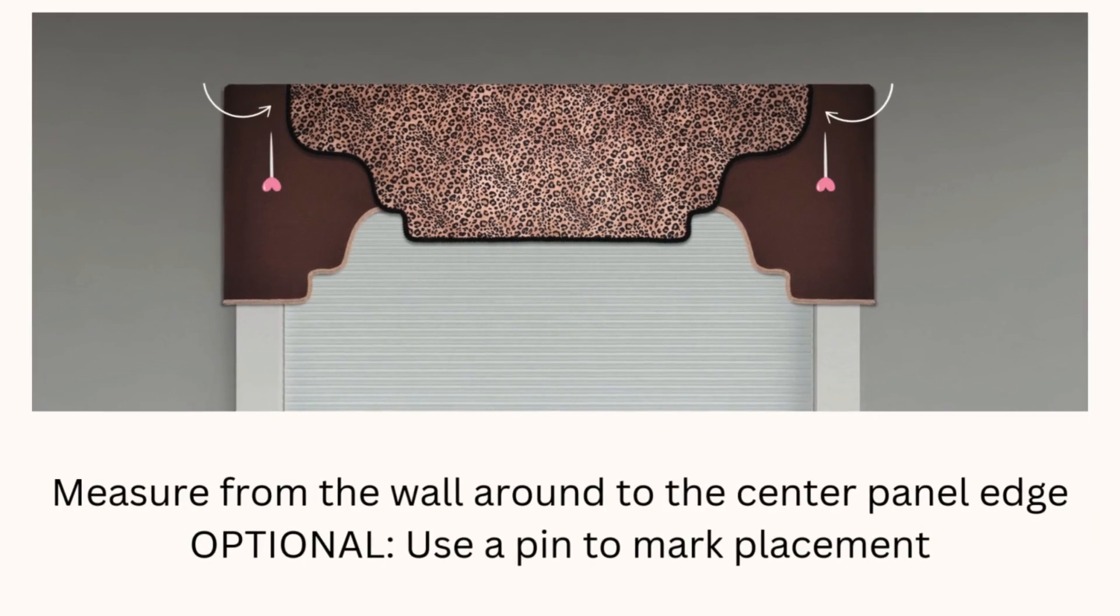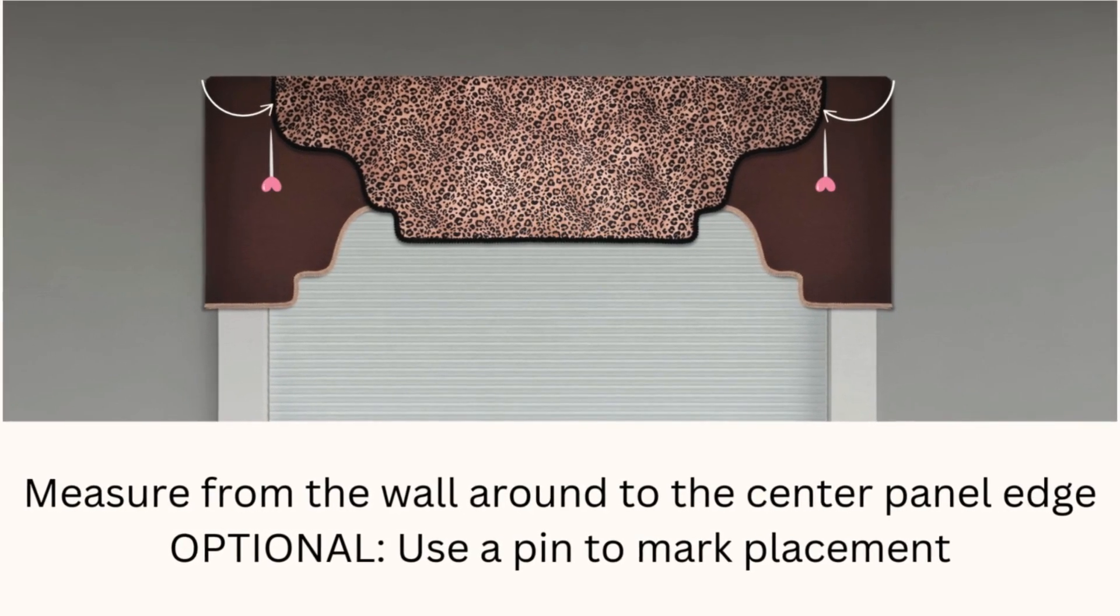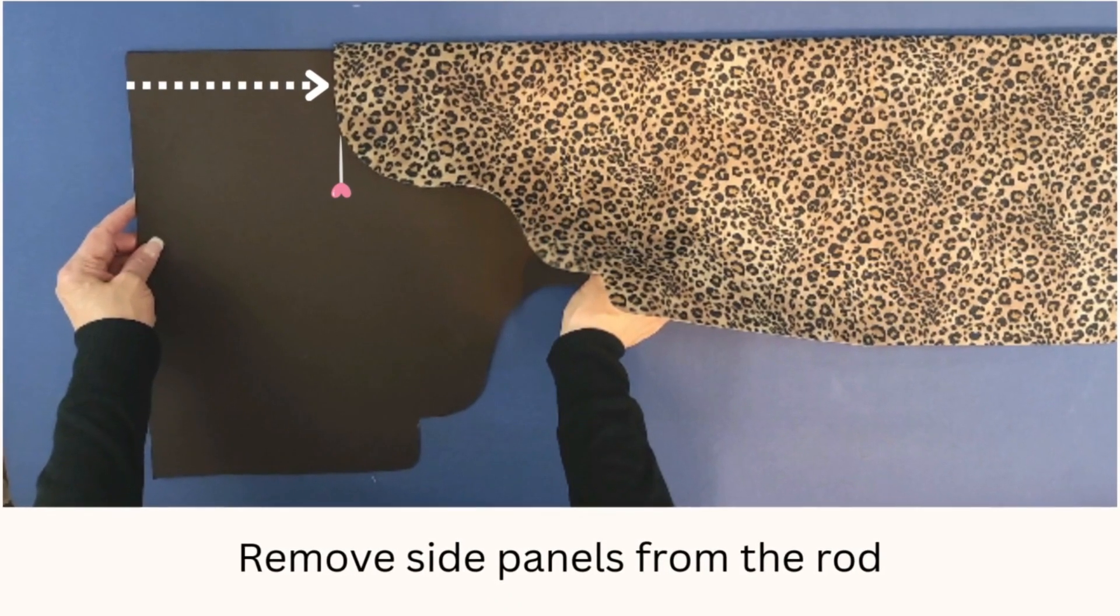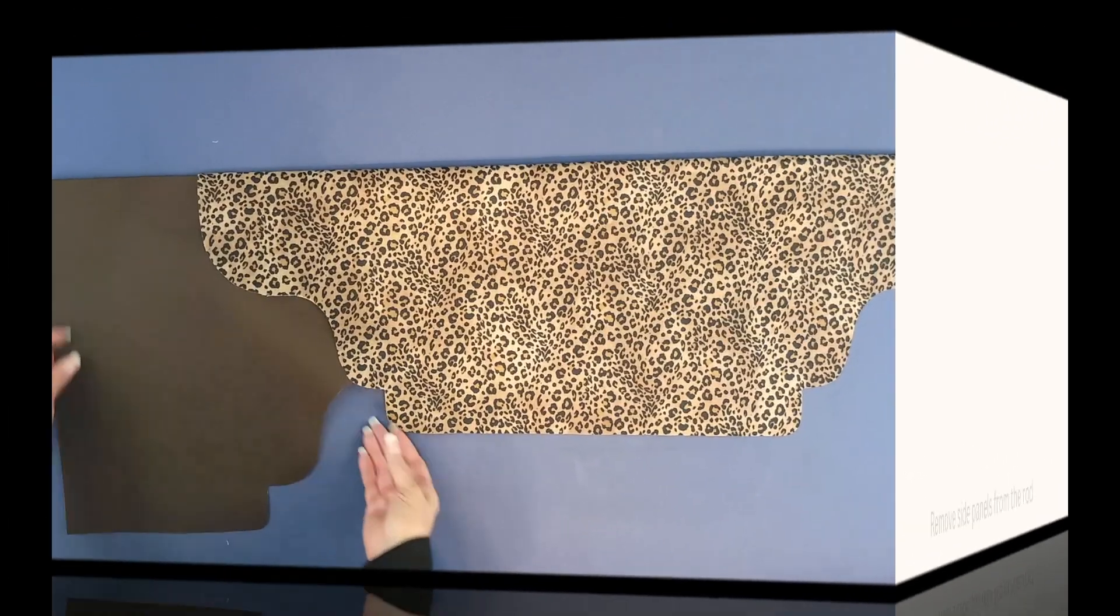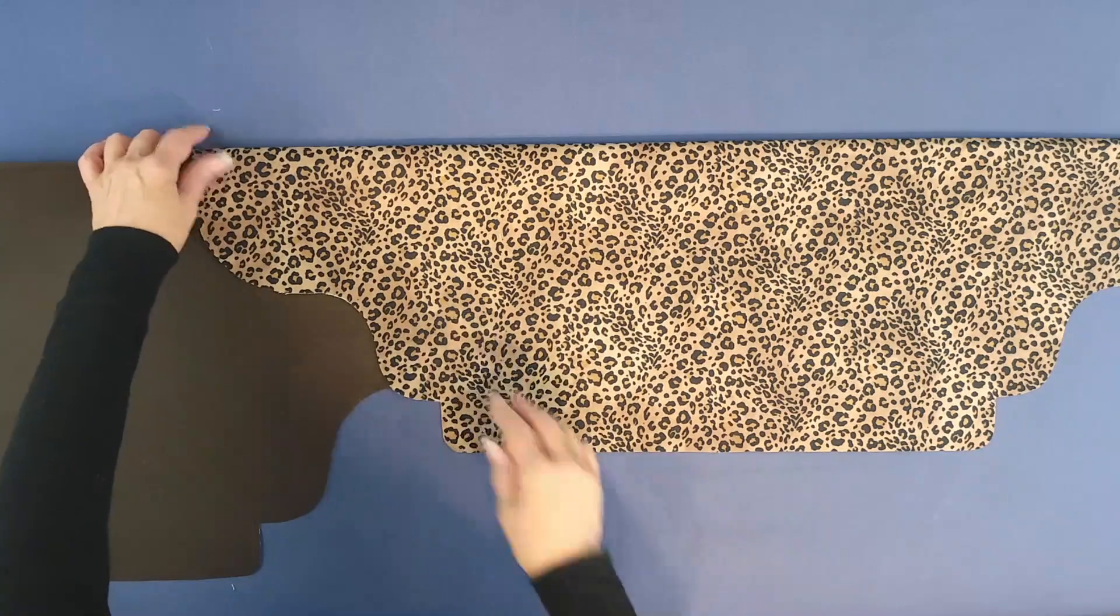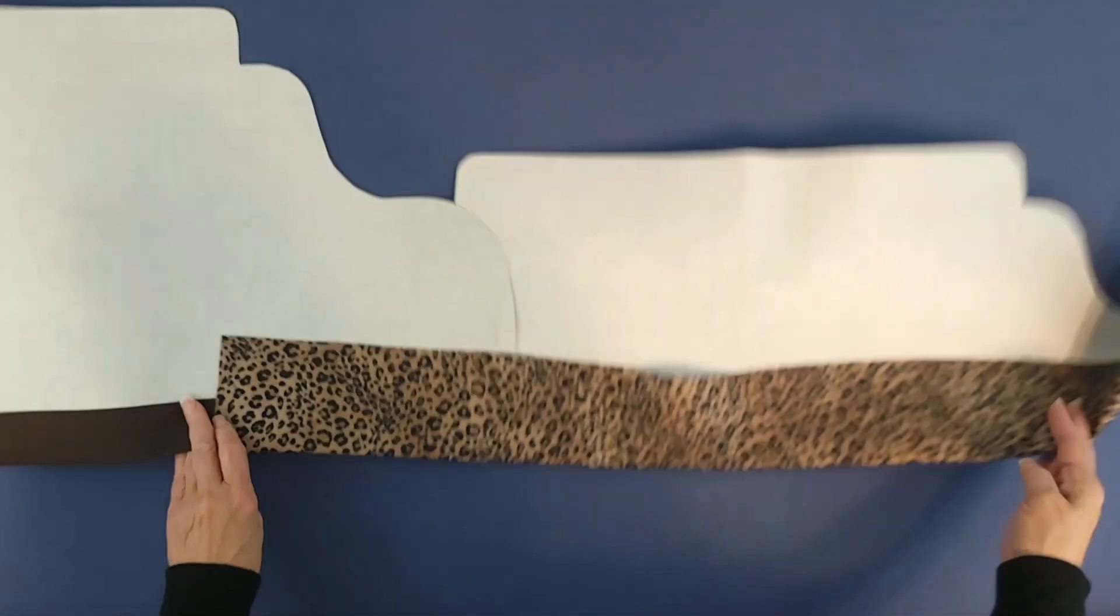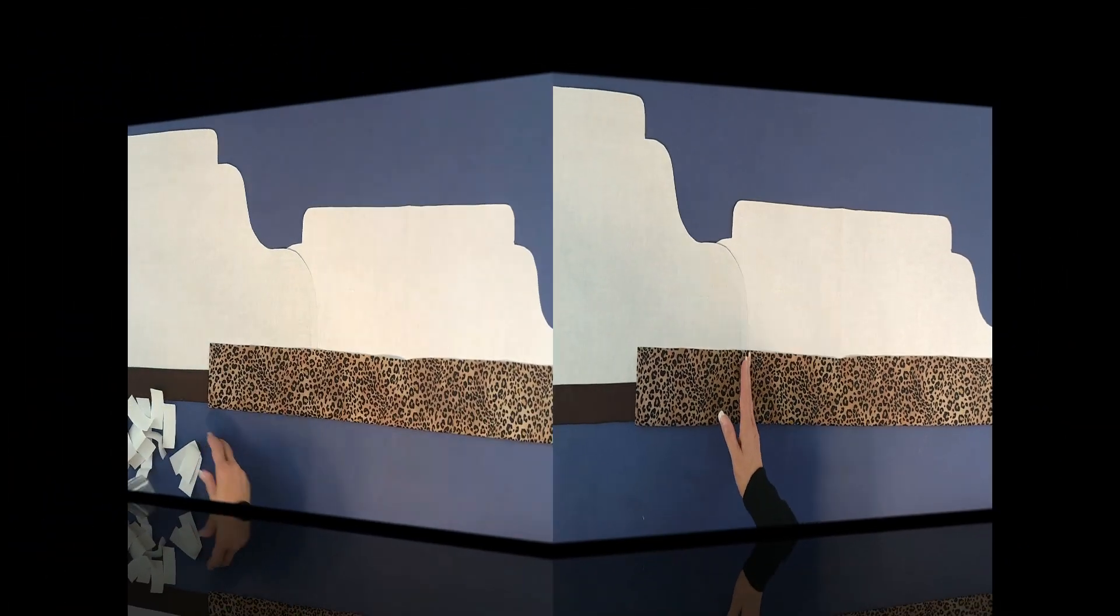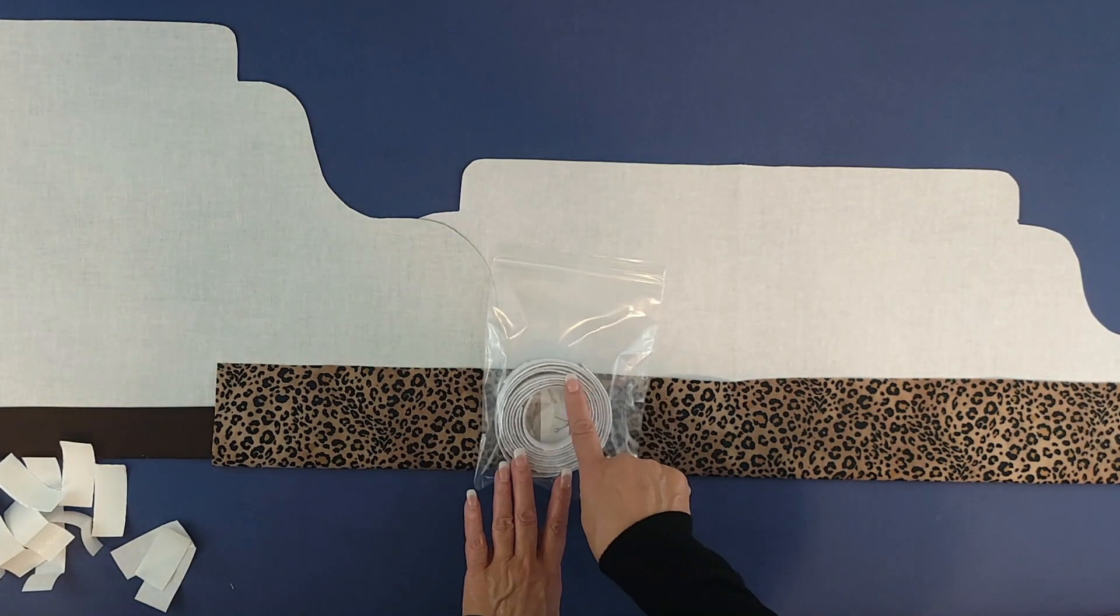Measure from around the return. You can pin where it meets the center panel to know the proper placement. Remove the side panels and position them on the table. Once you have that in place, flip it over and you can see between where the side panels will fall. This is where we'll position our fasteners.